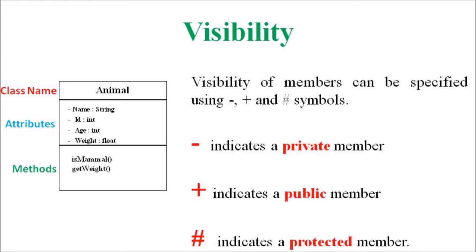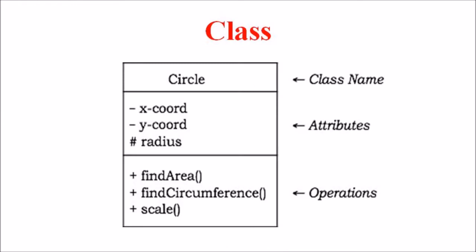An abstract class has the class name written in italics. For example, let us consider the circle class. The attributes of the shape circle are coordinates: x-coordinate and y-coordinate, so the attributes of this class circle are x-coord, y-coord, and radius. The operations are find area, find circumference, and scale methods. We assume that x-coord and y-coord are private data members, the radius is a protected data member, and the member functions are public. The speaker gives the diagrammatic representation of the mentioned class circle.